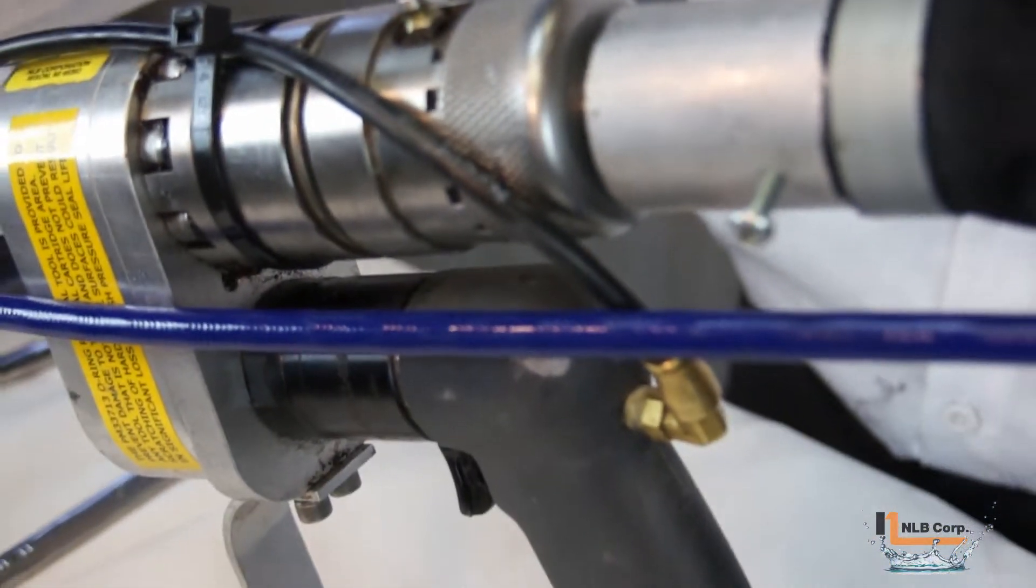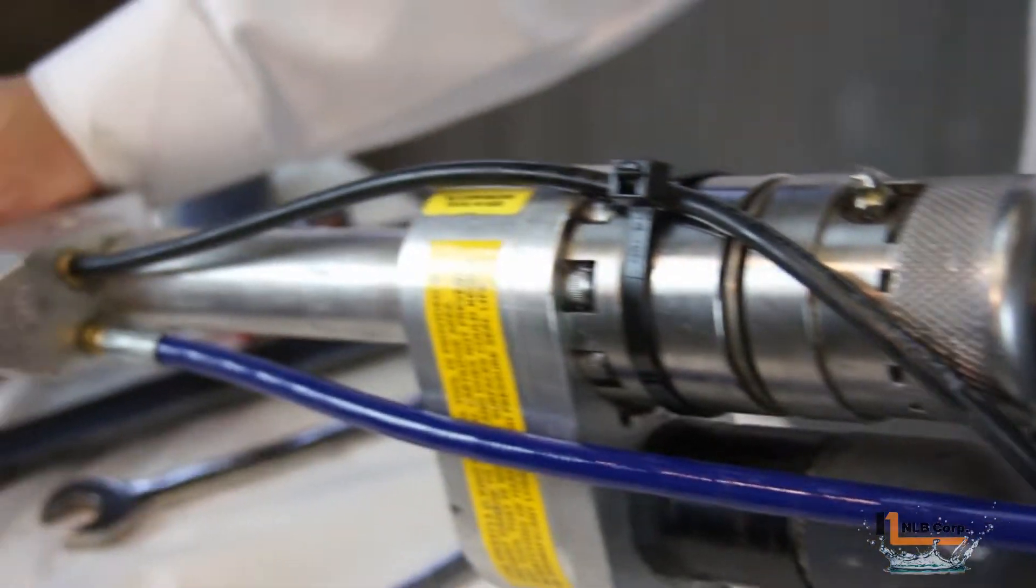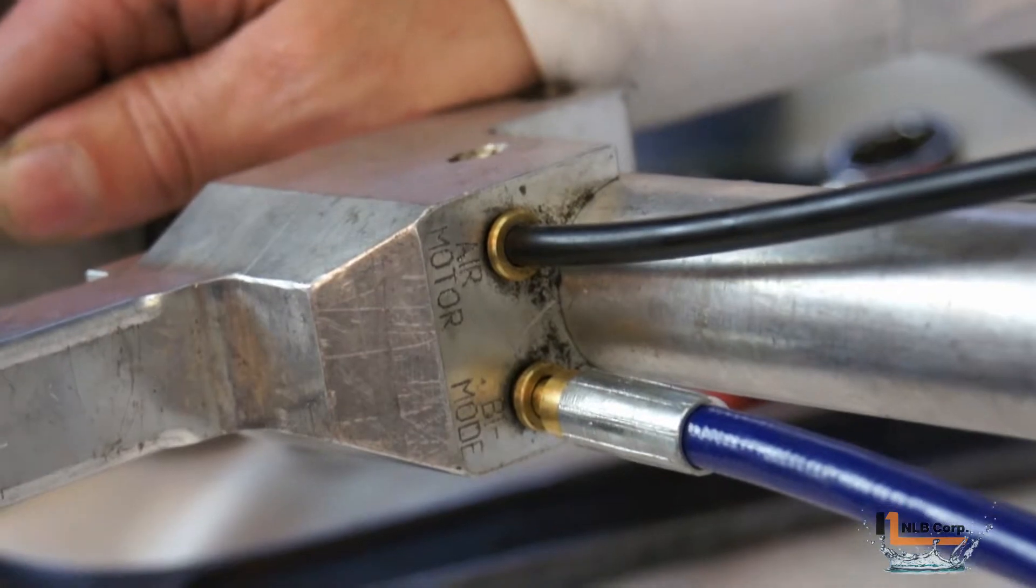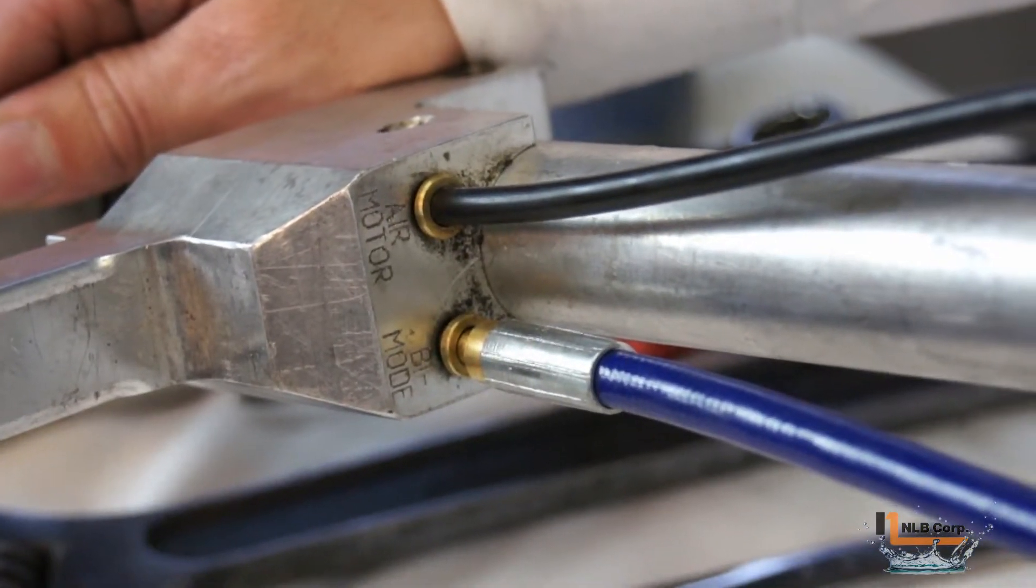The air motor port is connected to the rear handle and trigger assembly via a black hose. The bi-mode port is connected to the bi-mode via the blue air signal line. With these connections made...